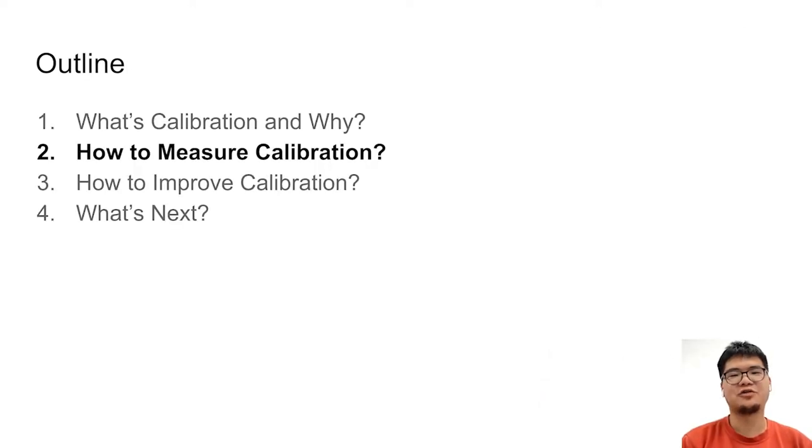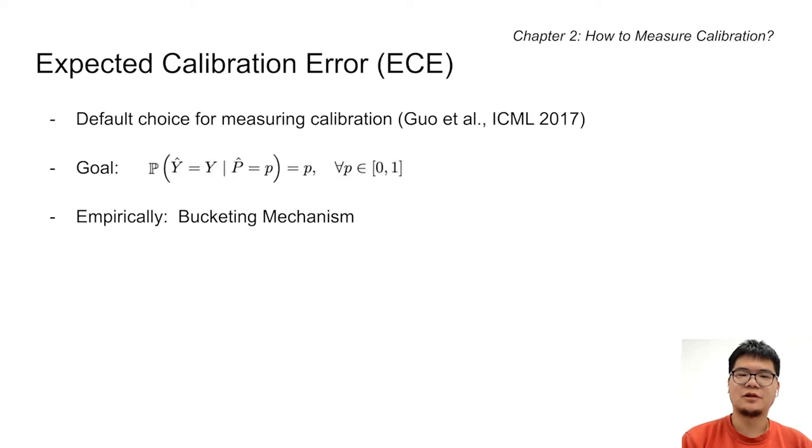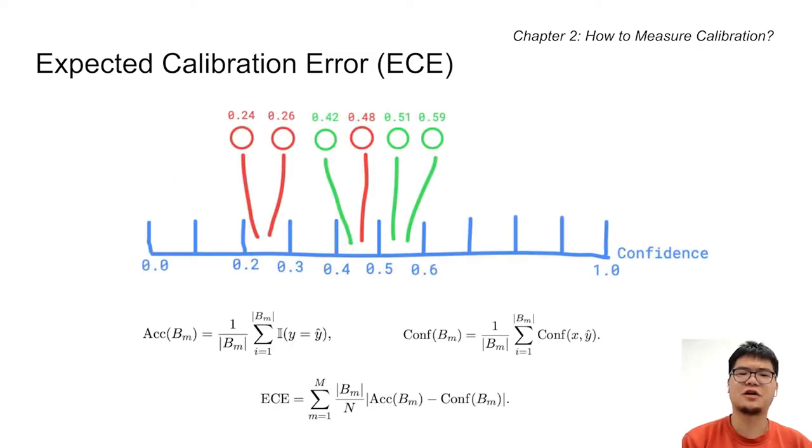Next, let's talk about how to measure calibration. The most popular metric is called expected calibration error, or ECE, where the goal is for the confidence to match the expected accuracy. It involves the bucketing mechanism where each bucket corresponds to a confidence range.